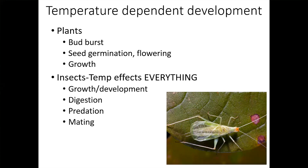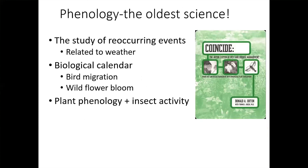Insects correlate their development and emergence with temperature, and humans have actually realized this for centuries. Phenology — recognizing patterns that occur in nature — is one of the oldest sciences in human culture. Humans very early on noticed patterns of blooming, bird migration, and insect activity. There's a book by Donald Orton that actually documents these patterns that happen on a regular basis.